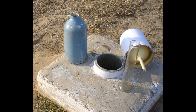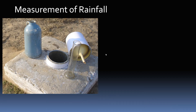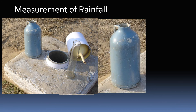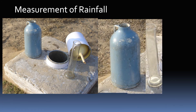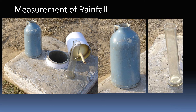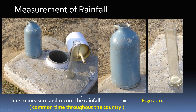How do we measure rainfall? A person comes daily at 8:30 am, opens the rain gauge, takes out the bottle along with the measuring jar, and measures the rainfall accumulated over the past 24 hours with the jar, then records it.